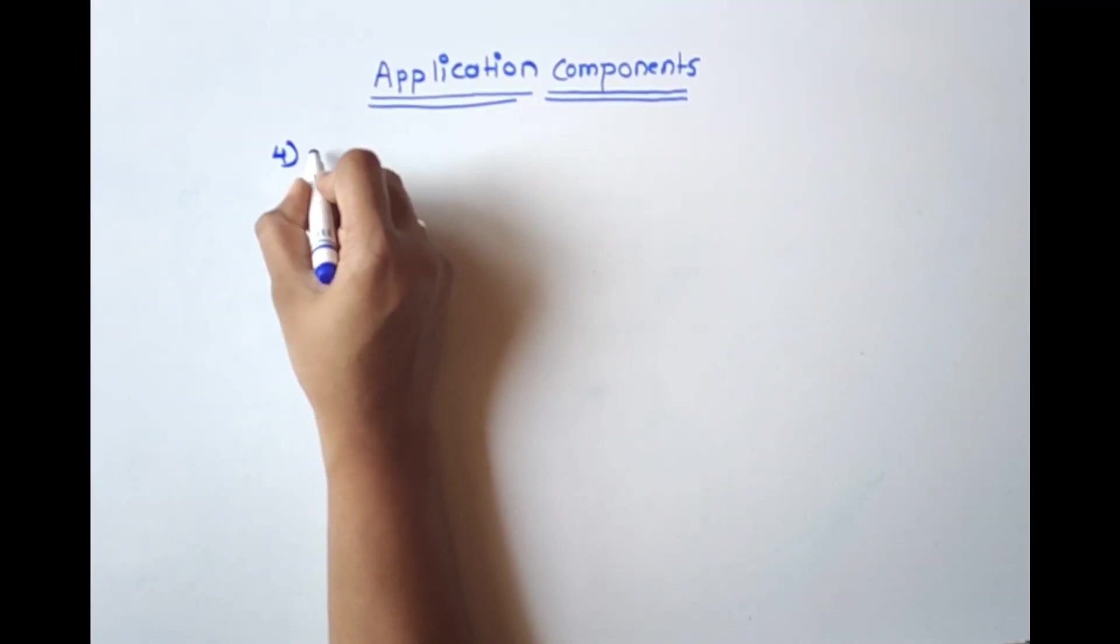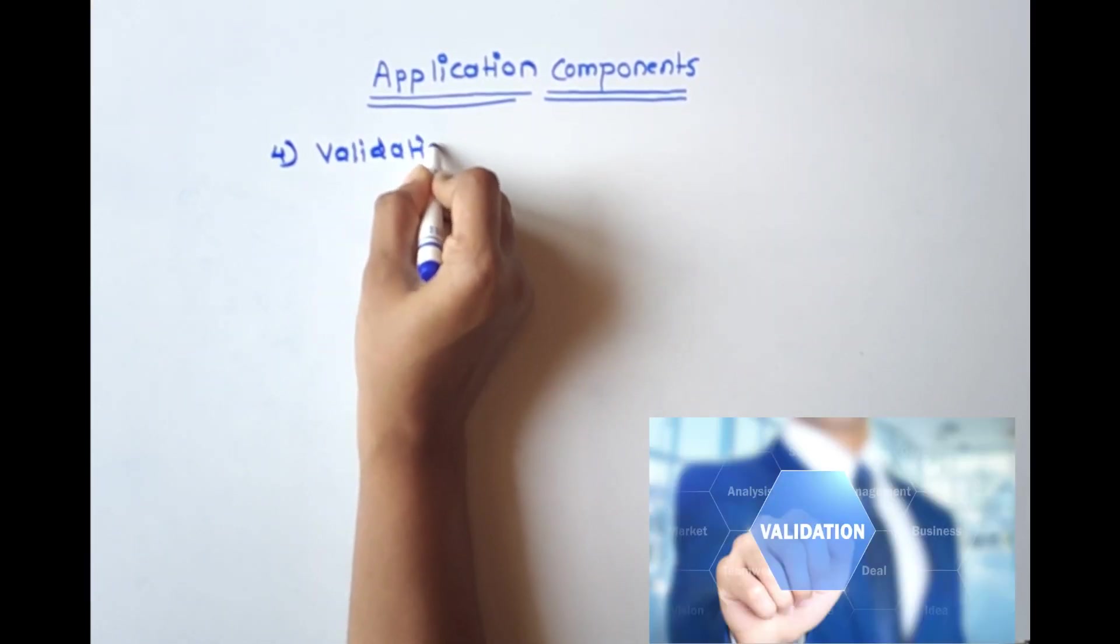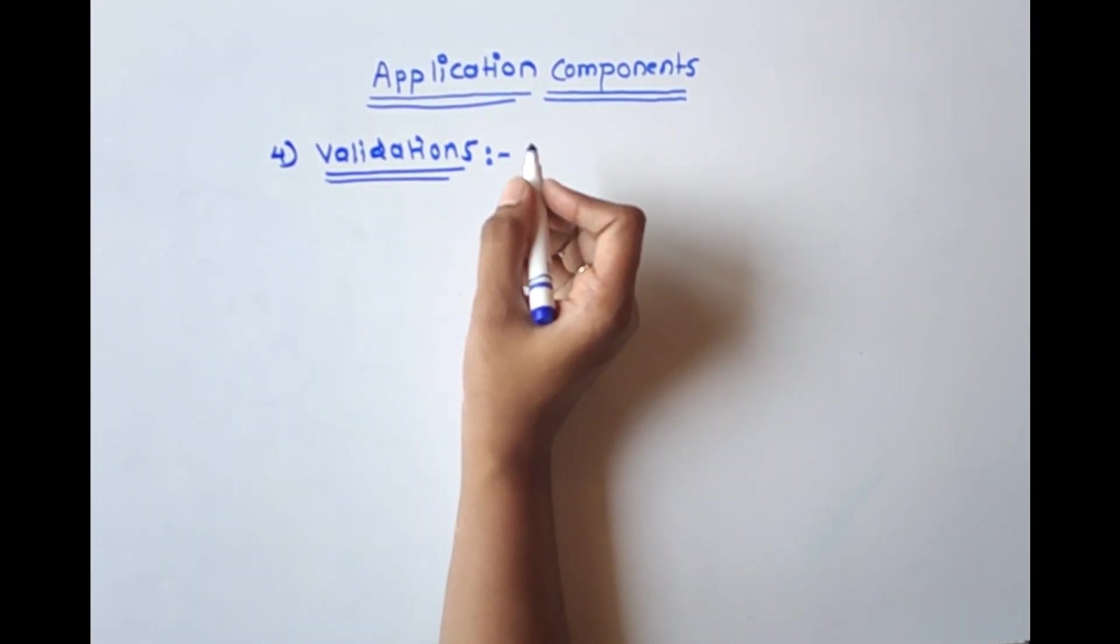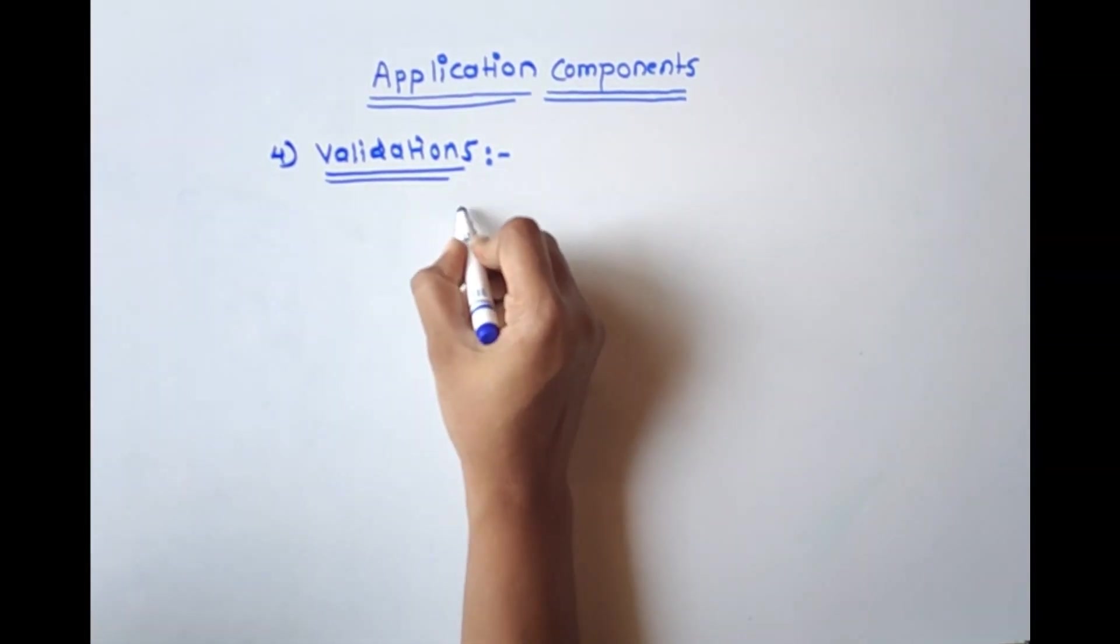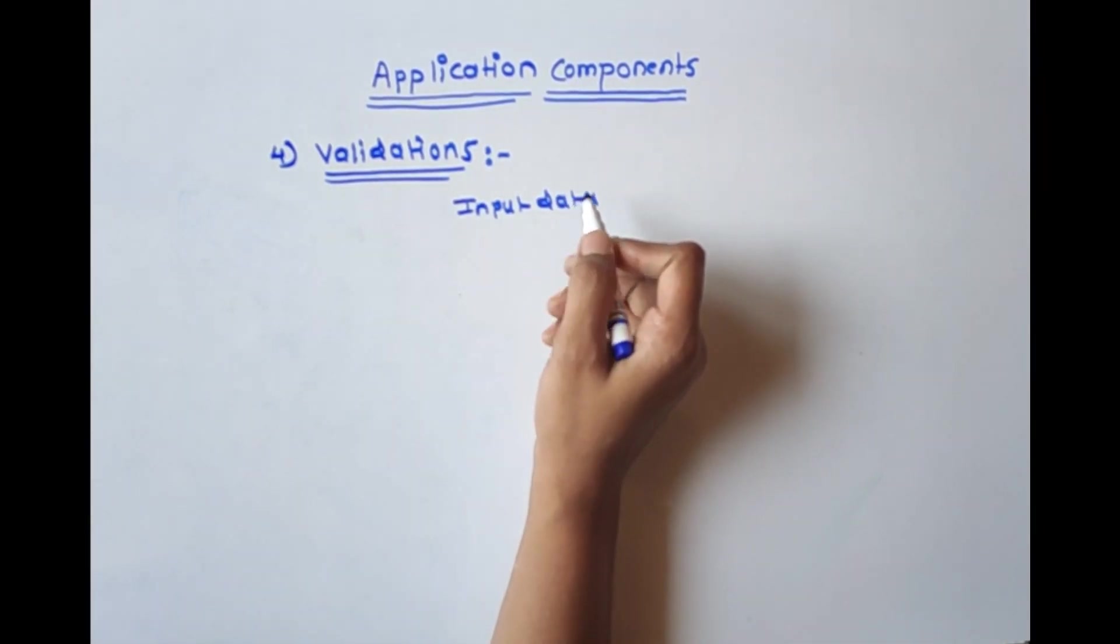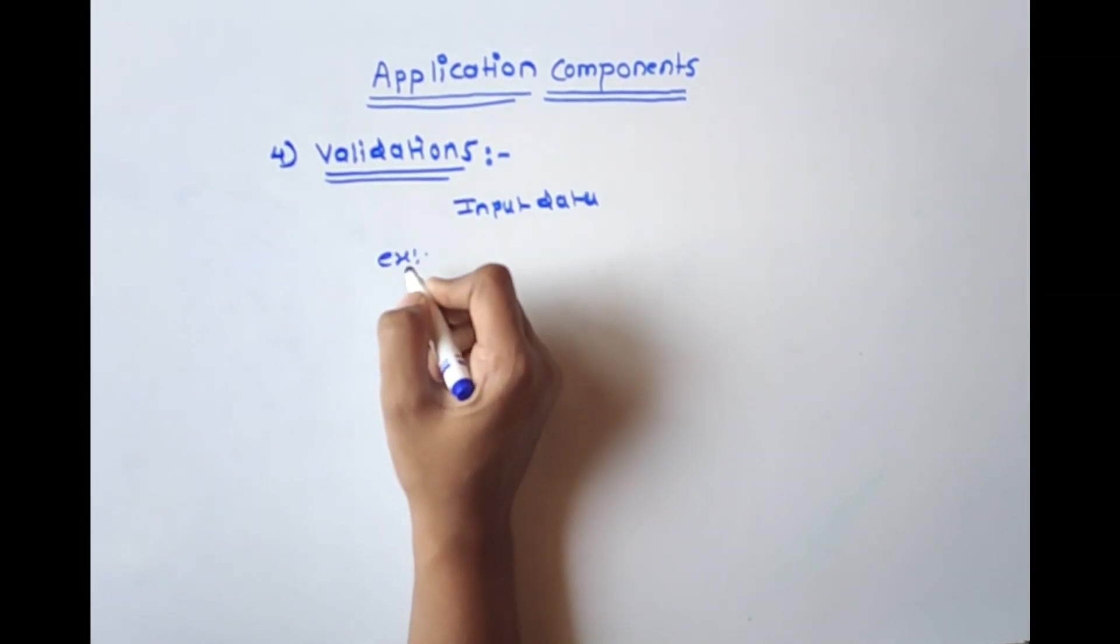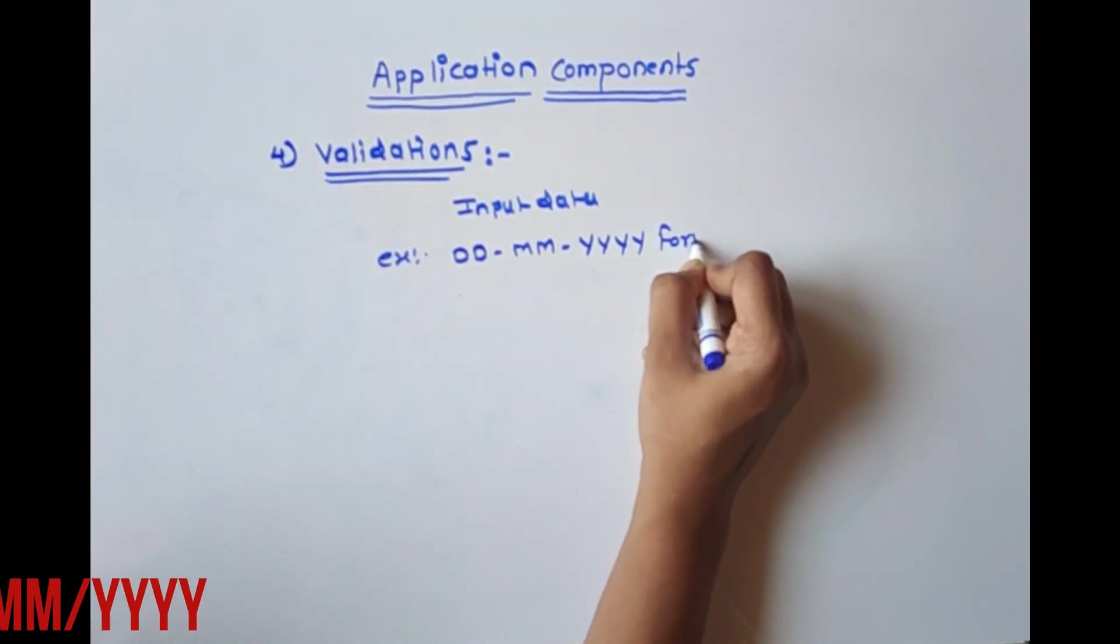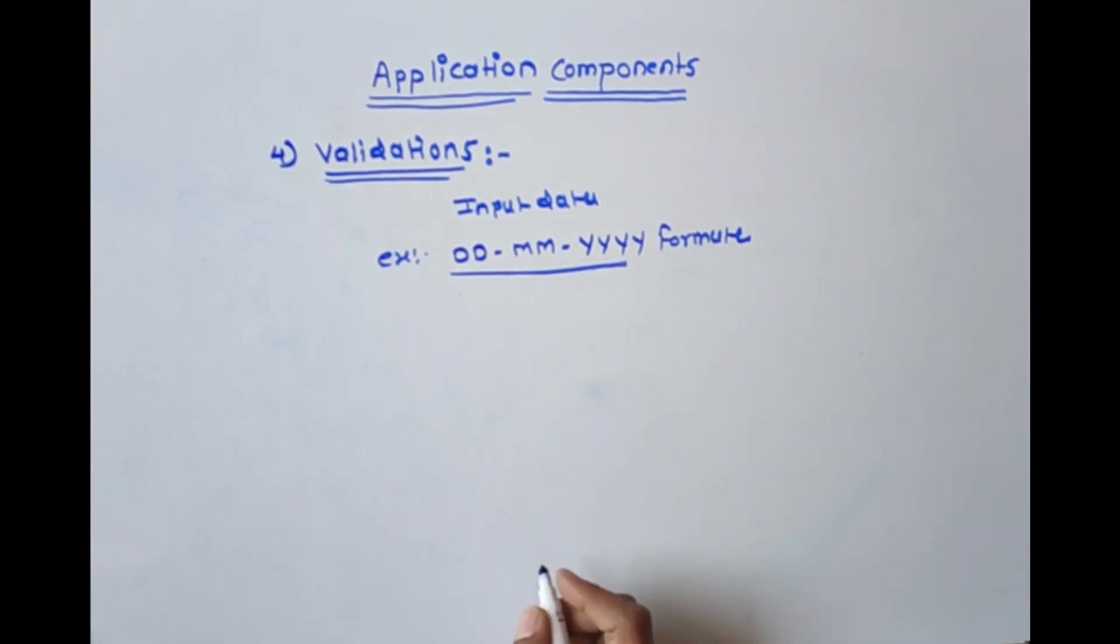Fourth one is validations. Validations means check done in the application. It ensures the correctness of input data and related functionalities. For example, date can be entered only in DD-MM-YYYY format. So this is the validation provided to the data which is provided through the date of birth.